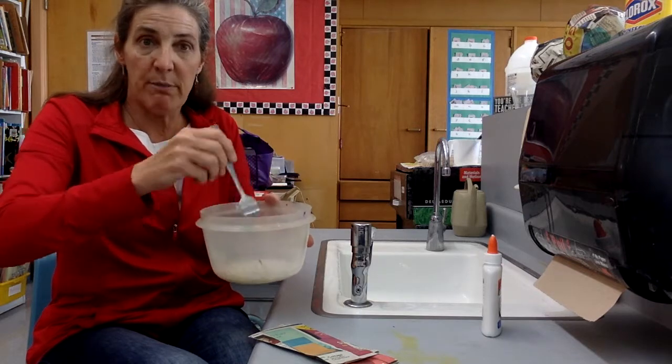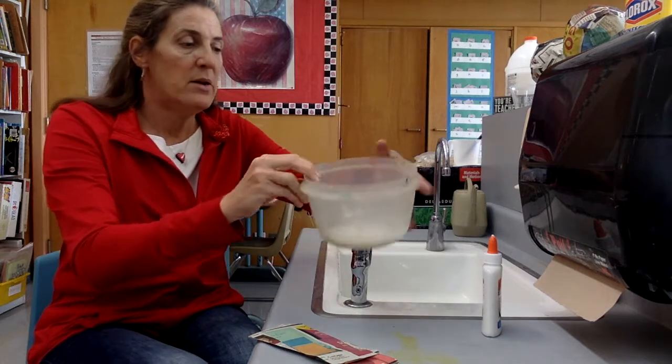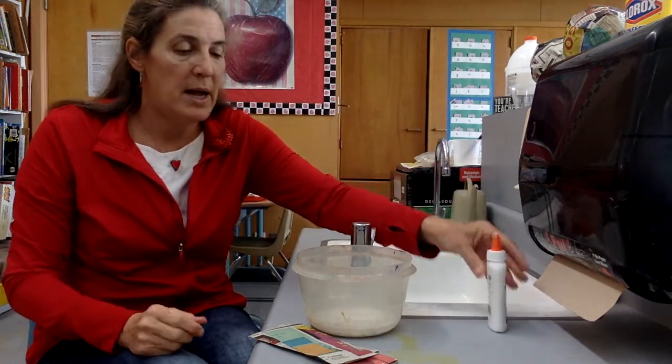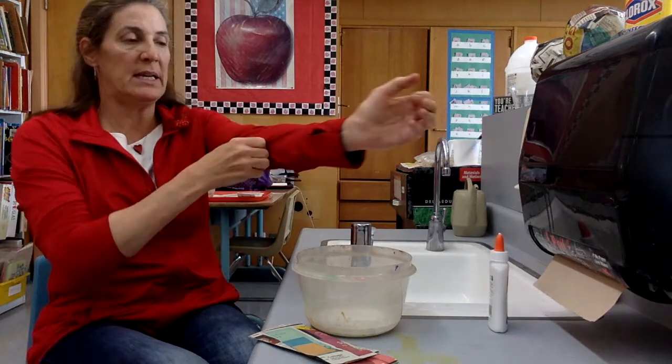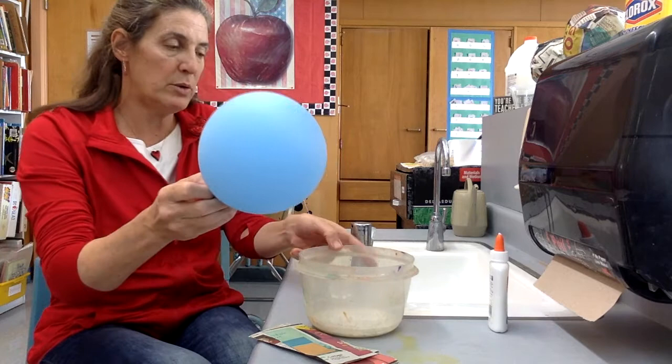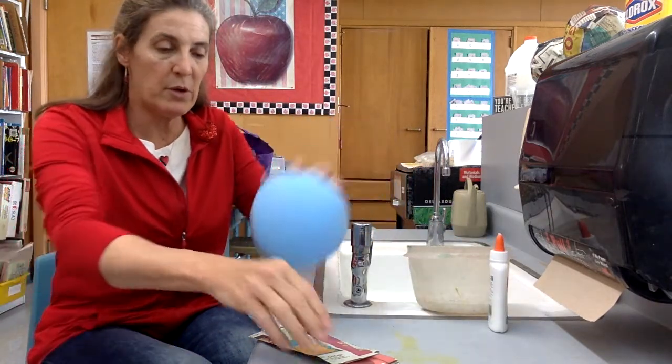This next part's a little messy and your hands might get a little sticky. Remember this Elmer's glue will wash off really well. Here's what you do. I pull up my sleeves, take my balloon. I'm going to hold it near the sink so that if it drips it doesn't drip all over my clothes or the floor.